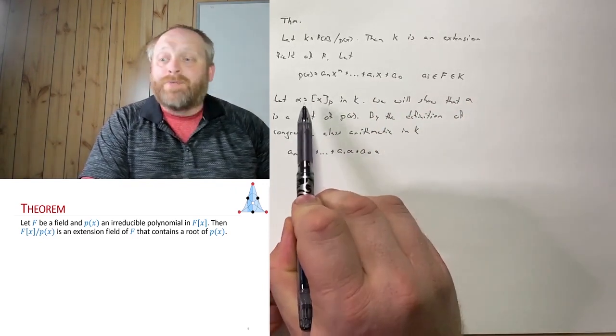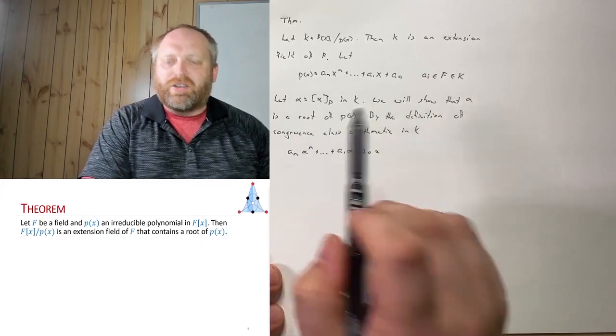Now remember, I said alpha was equal to the congruence class of x modulo p.